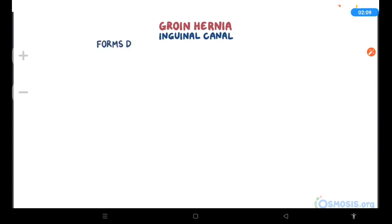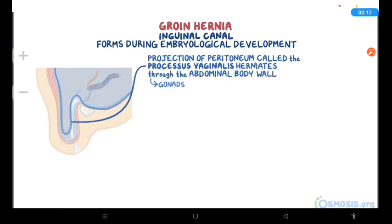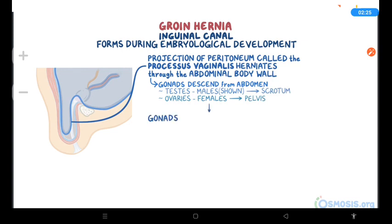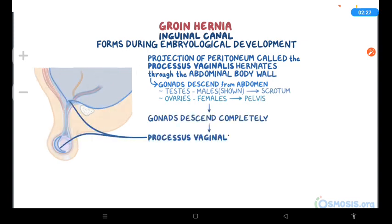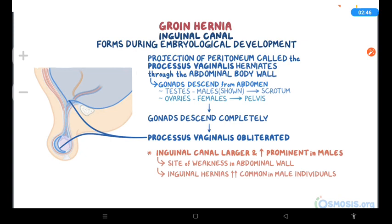The inguinal canal forms during embryological development. The process begins when a projection of the peritoneum called the processus vaginalis herniates through the abdominal body wall to allow the gonads — testes in males and ovaries in females — to descend from the abdomen where they formed to their final location in the scrotum or pelvis, respectively. When the gonads have descended completely, the processus vaginalis is obliterated, closing off the tunnel. Since the testes have a longer journey, the inguinal canals are larger and more prominent in males, creating a physiological site of weakness in the abdominal wall. This makes inguinal hernias far more common in genetically male individuals.